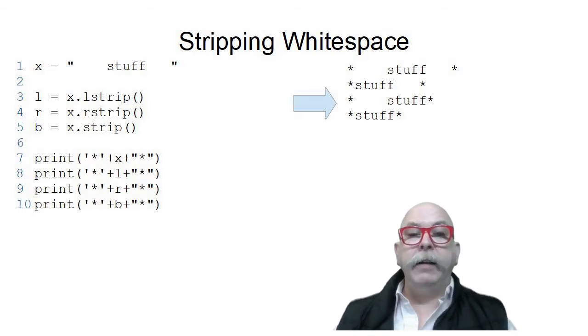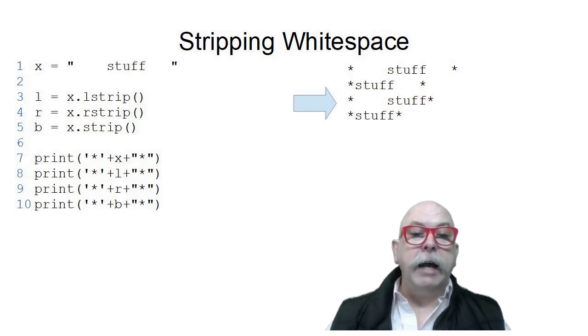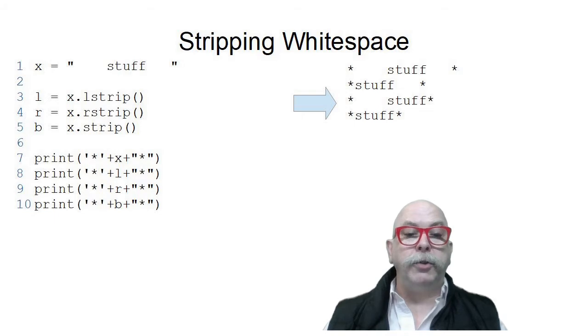L, where I've stripped the left end, and R, where I've stripped the right end, are the next two lines. And the last line is where I've used strip to strip the whitespace from both ends of the string.